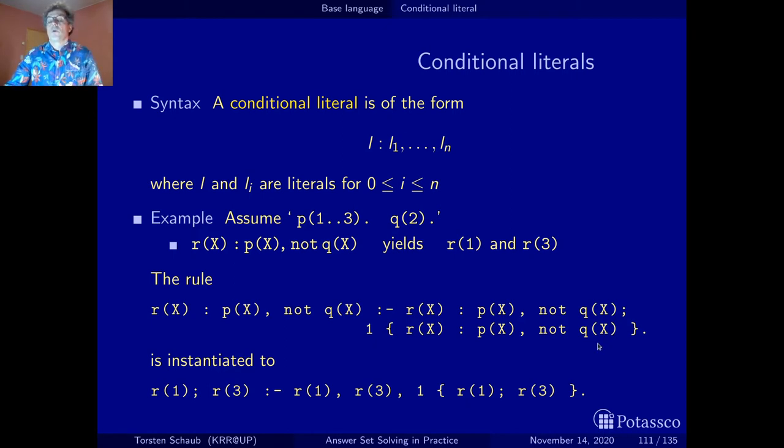And well, as you know, right, rules have in the body, a body represents a conjunction of elements. And as you do not know but may know a bit later and this is not so relevant for the course, in the head there is a disjunction of elements. Hence if you expand the same conditional literal in the head and in the body, you get here a disjunction of elements which says r(1) or r(3). And here it says r(1) and r(3). Okay?